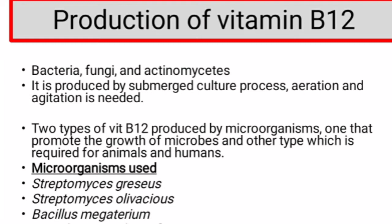Different types of microorganisms are used for the production, which include Streptomyces griseus, Streptomyces olivaceous, Bacillus megaterium, Pseudomonas denitrificans, Propionibacterium freudenreichii, and Propionibacterium shermanii. Mostly Streptomyces are used. It is isolated from soil.